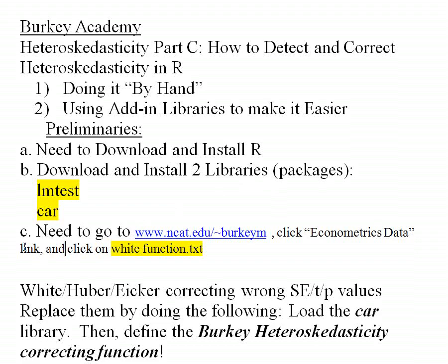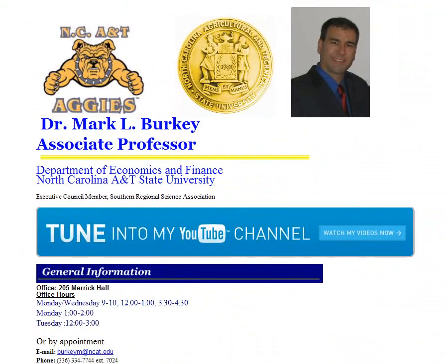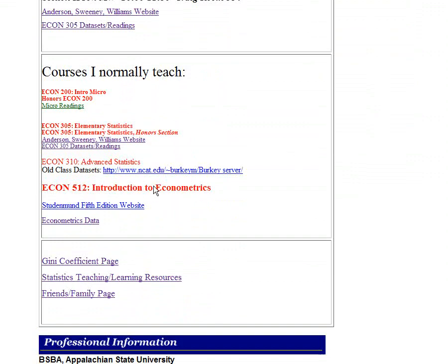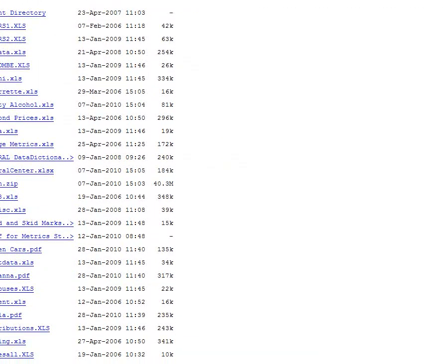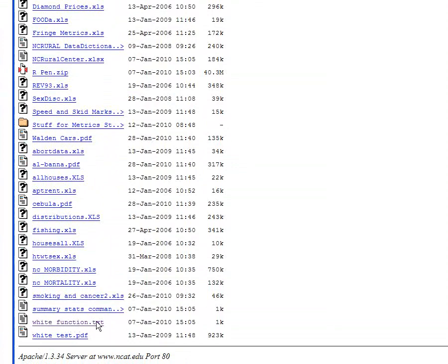I also have a little program that I typed up. You need to go to www.ncat.edu/tilde BerkeyM and click on a link called Econometrics Data, then click on a file called whitefunction.txt. Here's my website — if you go down to Econ 512 Introduction to Econometrics, click on Econometrics Data and there's a simple text file called whitefunction.txt.